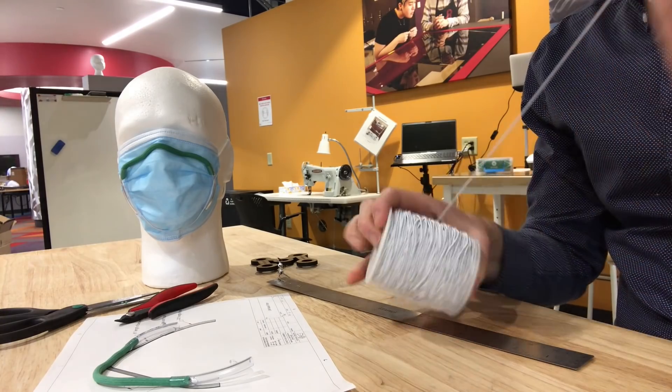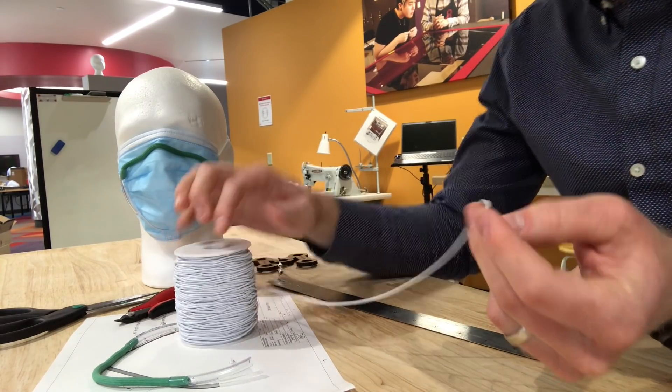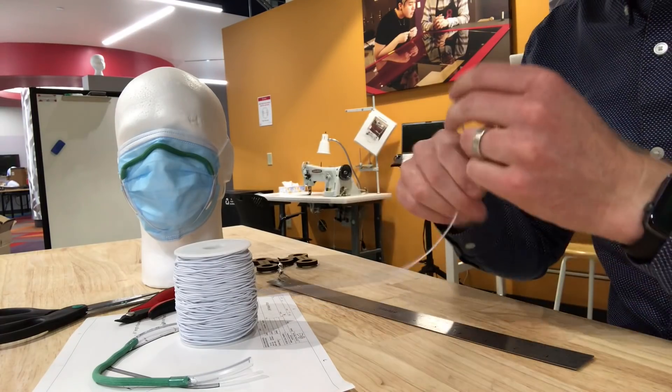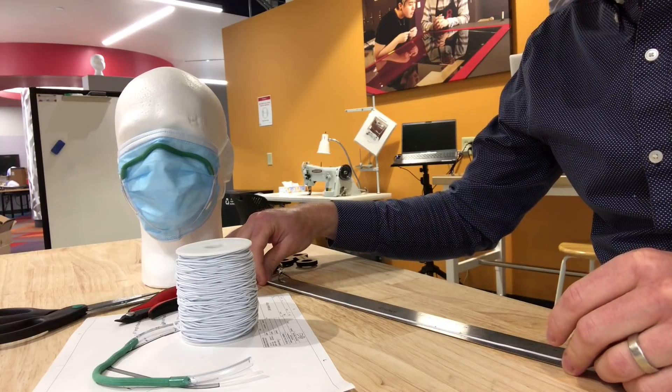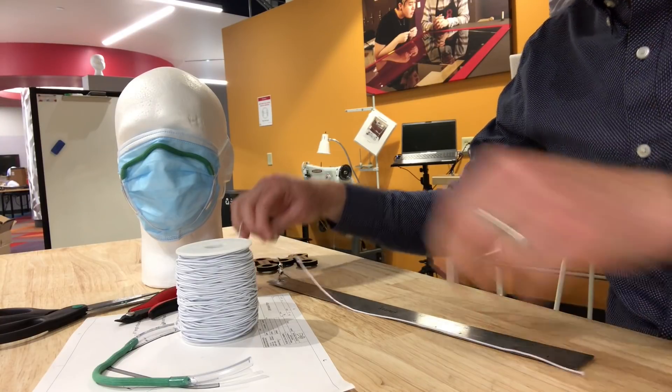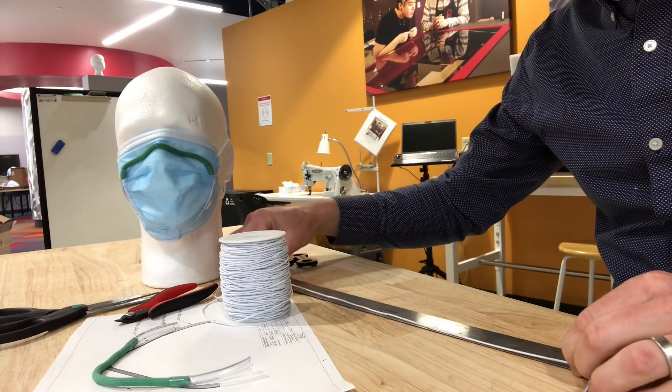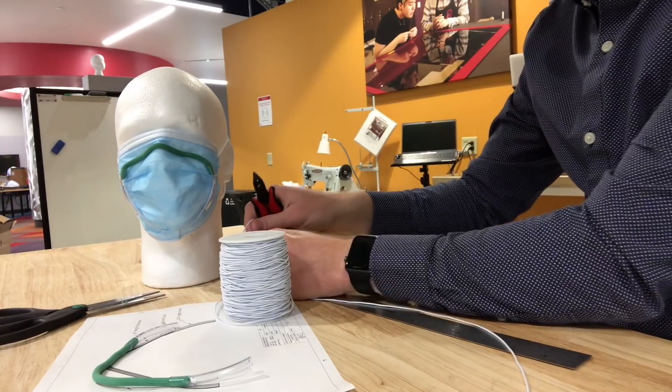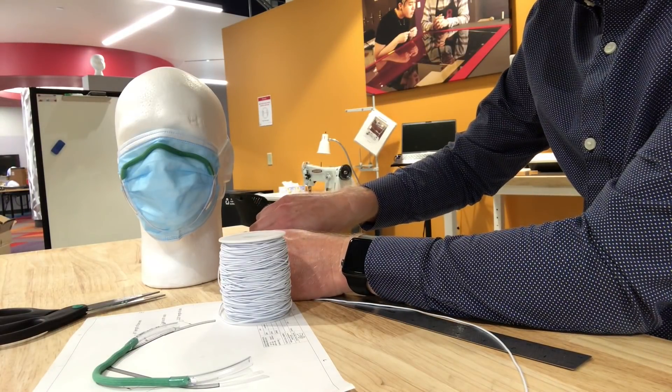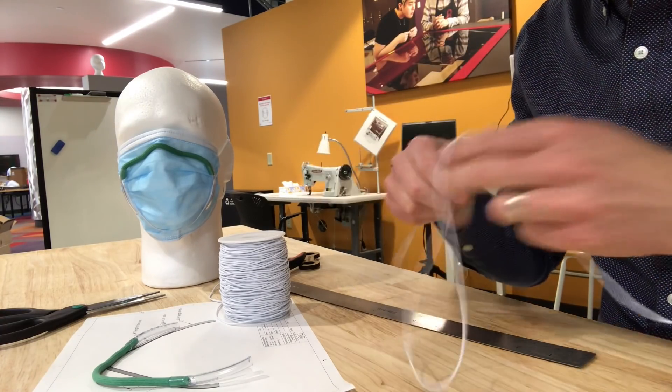So I have a spool of elastic here. And I'll put all the details again down in the details of the video. About 30 inches, and then I can just cut that either with the snips or with scissors. It doesn't have to be exact because you can always trim it at the end.